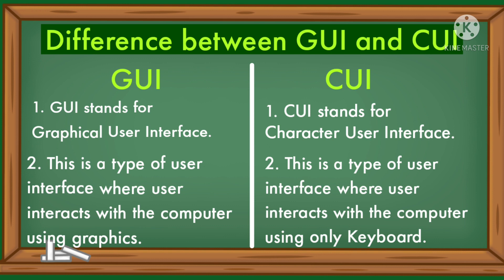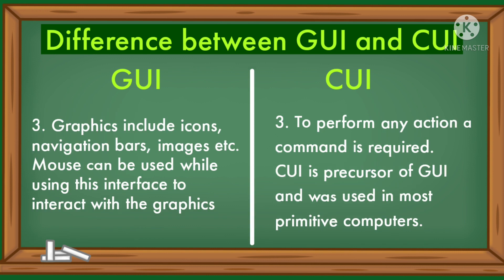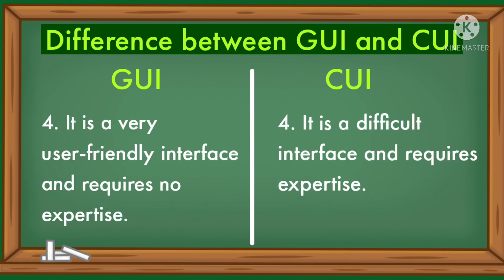Graphics includes icons, navigation bars, images, etc. A mouse can be used while using the GUI interface to interact with graphics. To perform any action in CUI, a command is required. CUI is a precursor of GUI and was used in most primitive computers.